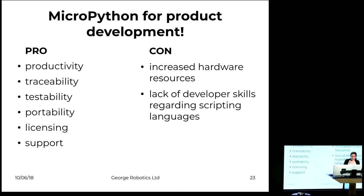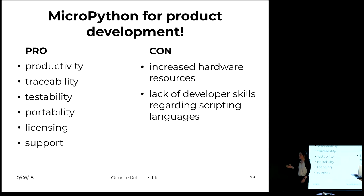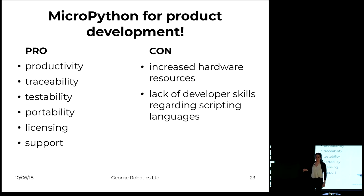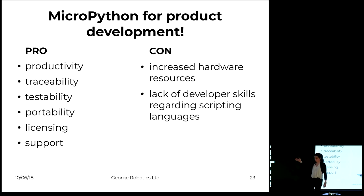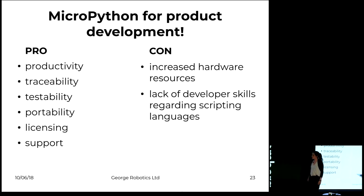To sum up the pros: productivity went up; traceability, because you have a huge open source community that digs out problems and you can rely on that; testability is fast because you might already have the running board to just plug into your adapter board; it's really easy to port to a more powerful controller; and the MIT license is an advantage because it allows you to use the code while still keeping your proprietary parts closed.